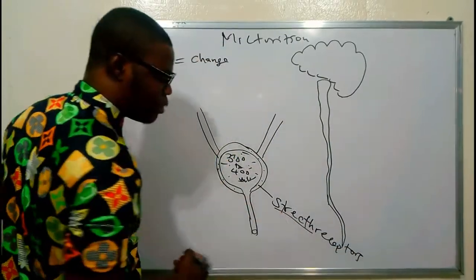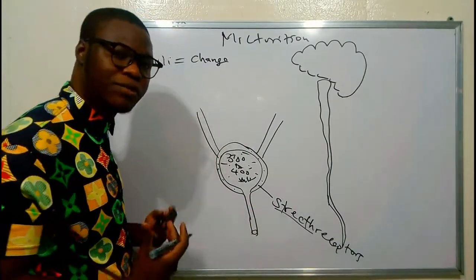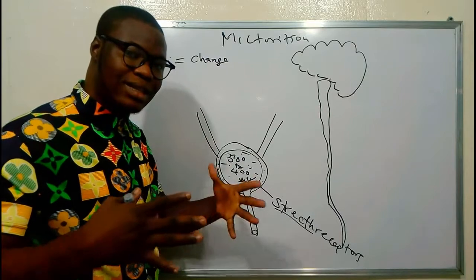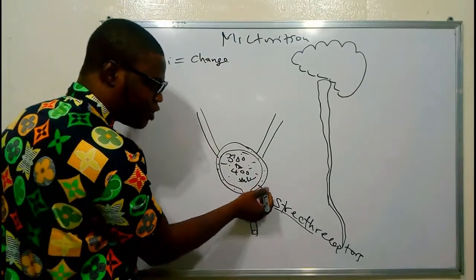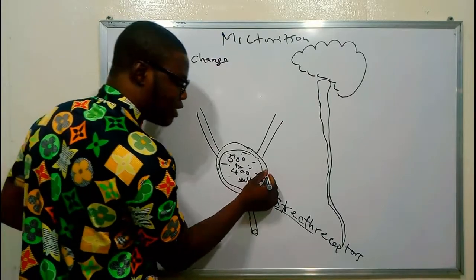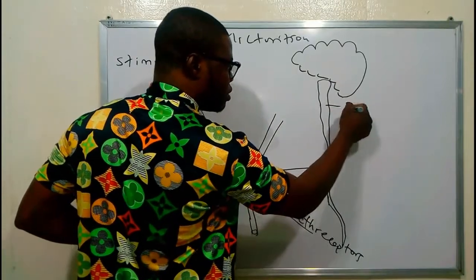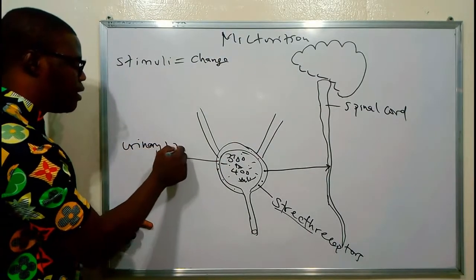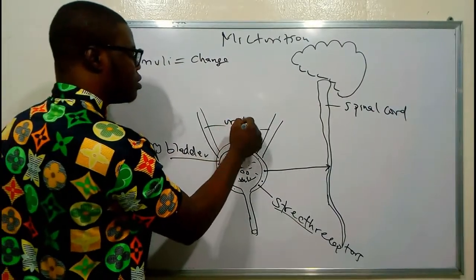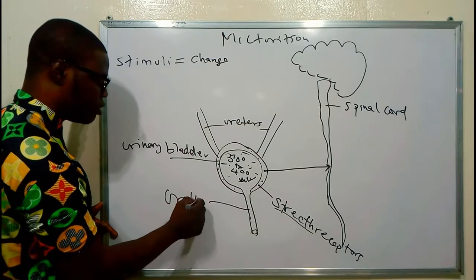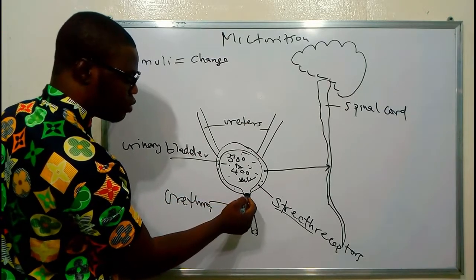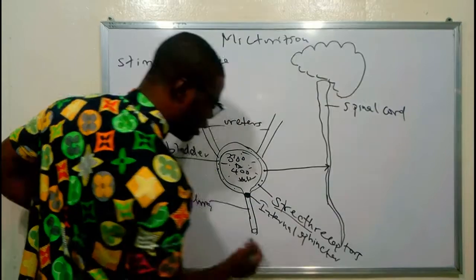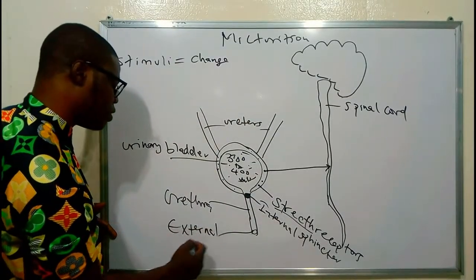These are called stretch receptors because they are sensitive to stretch. When the urinary bladder is filled with urine of about 300 to 400 mL, it is going to stretch out. The stretch receptors receive the impulse and transmit it to the sacral region of the spinal cord. The urethra has two sphincters: the internal sphincter on top and the external sphincter below.